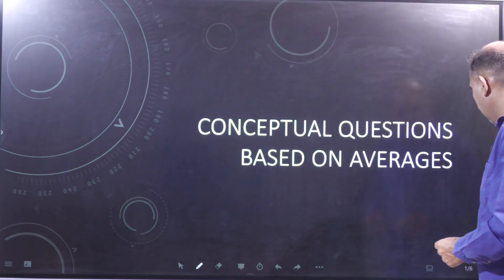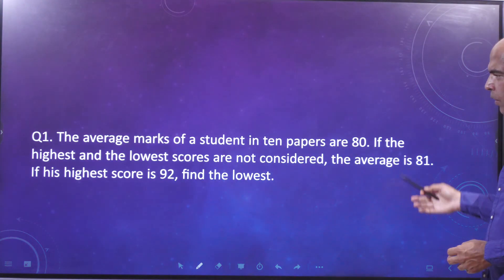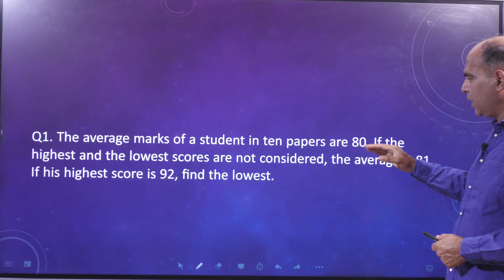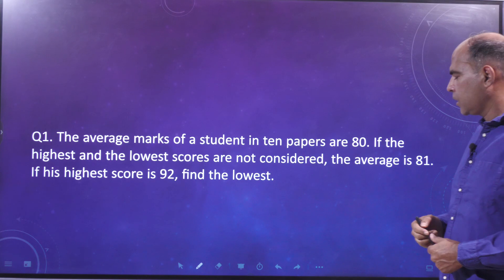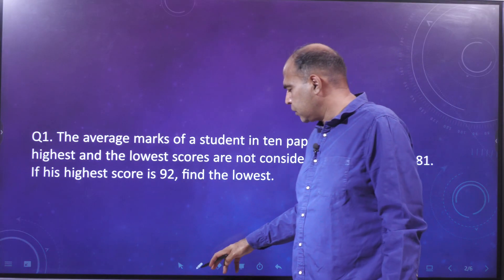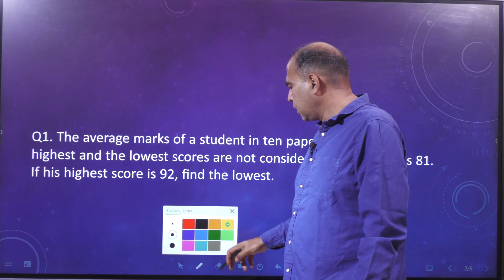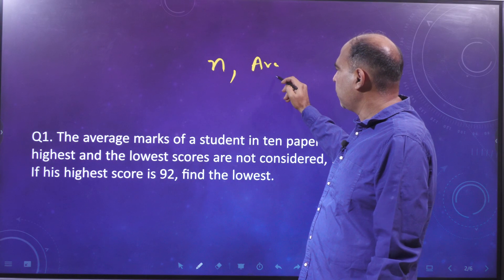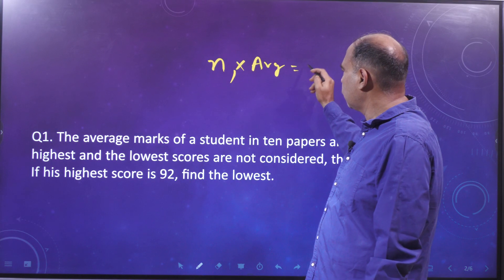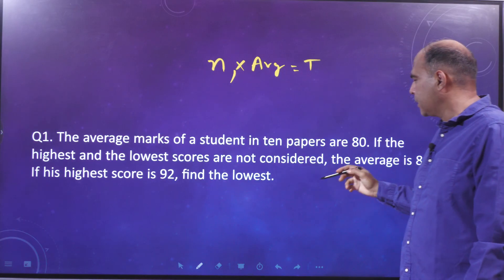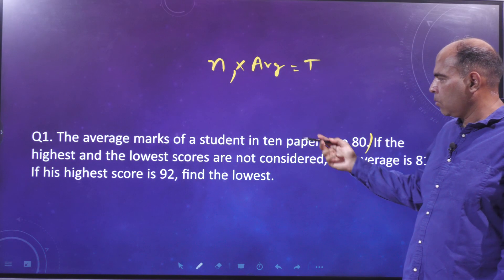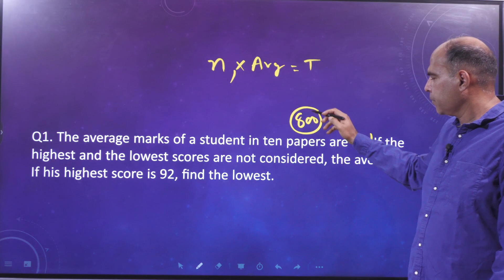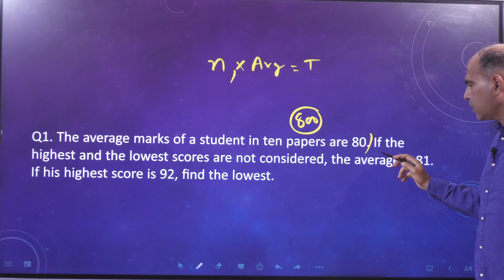Let's start with the first question. The average marks of a student in 10 papers are 80. The key formula to be used here is: n into average equals total. So from this statement you get the total marks he has scored, which is 800 in 10 papers.